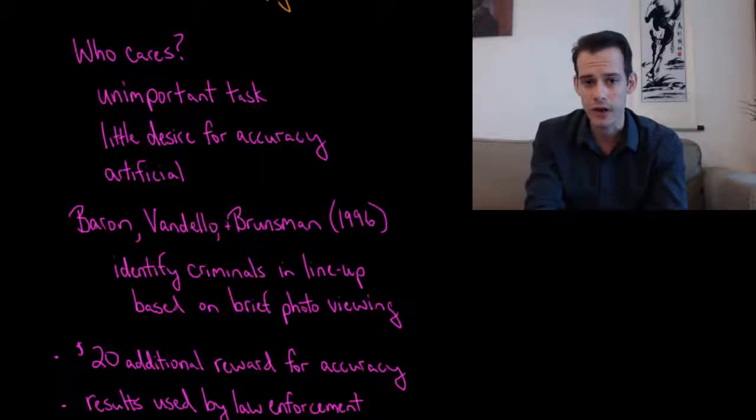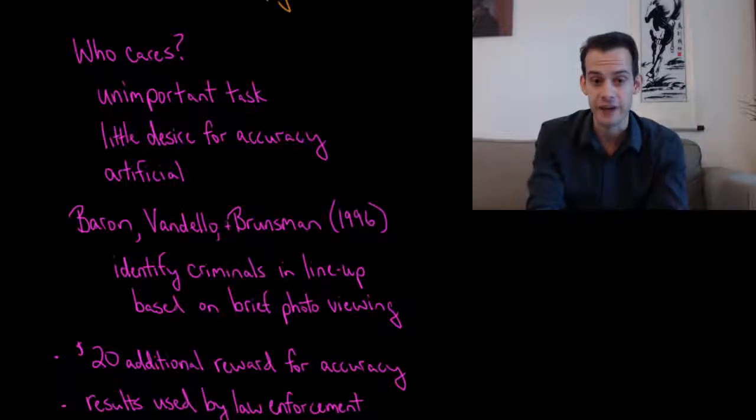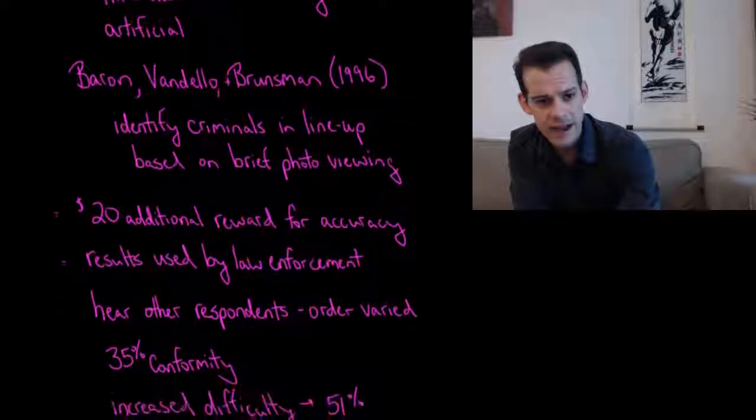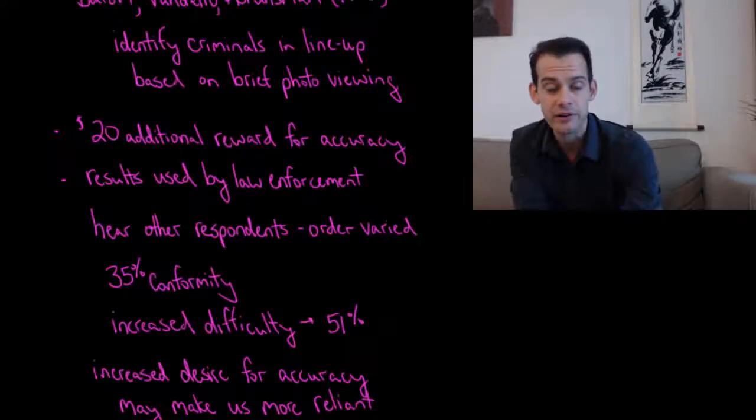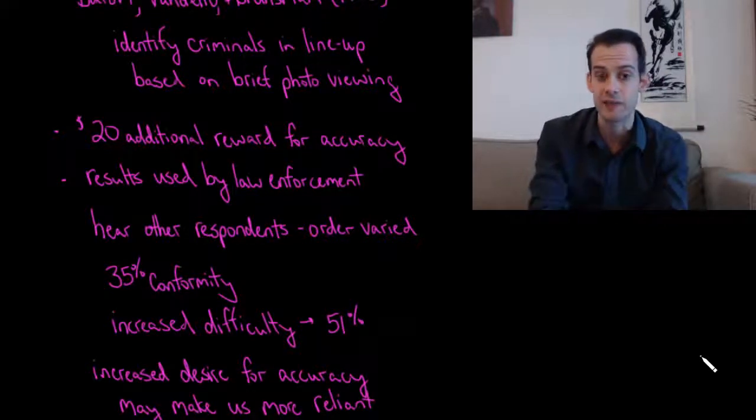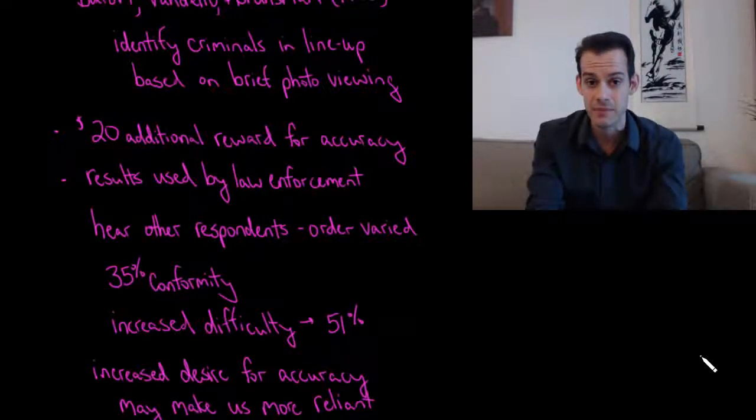So how can we look at other research that might try to get around these problems? This brings us to a study in 1996 by Robert Baron, Joseph Vandello, and Bethany Brunsman. And what Baron, Vandello, and Brunsman did was they tried to make a task that was important and where accuracy mattered, where people would want to do a good job. And the task that they used was identifying criminals in the lineup. So the participants would briefly see a photo of a suspect and then they'd have to pick that person out from a real lineup.